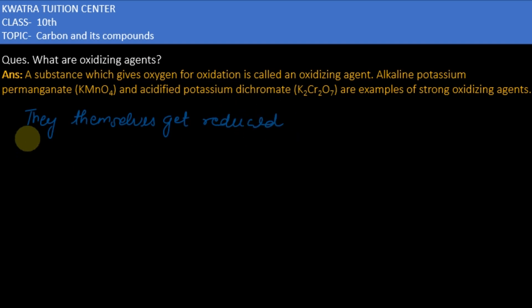For example, alkaline KMnO4, potassium permanganate, and the other example is acidified potassium dichromate, which is K2Cr2O7.